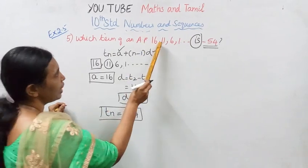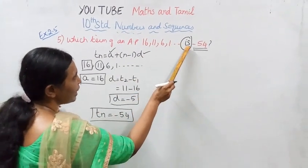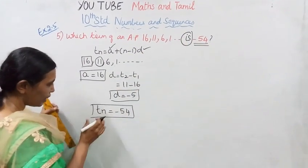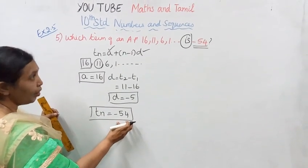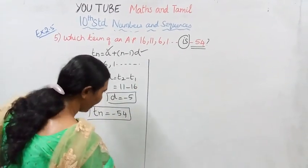Which term of an AP? 16, 11, 6, 1 is minus 54. The TN value is minus 54.